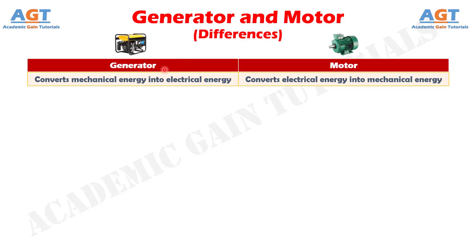Difference number 1. A generator is a device which converts mechanical energy into electrical energy, whereas a motor is a device which converts electrical energy into mechanical energy.